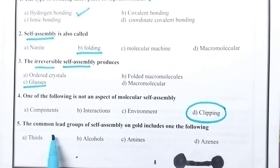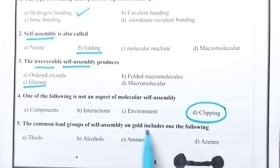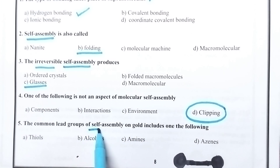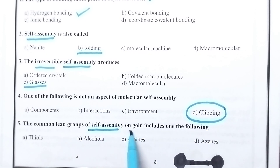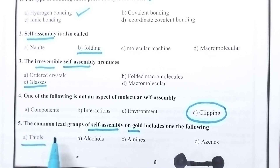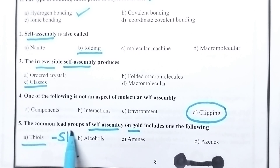The common lead groups of self-assembly on gold include one of the following. Especially, when we discuss about self-assembly on gold, it mainly deals with thiols — thiols means the SH group.